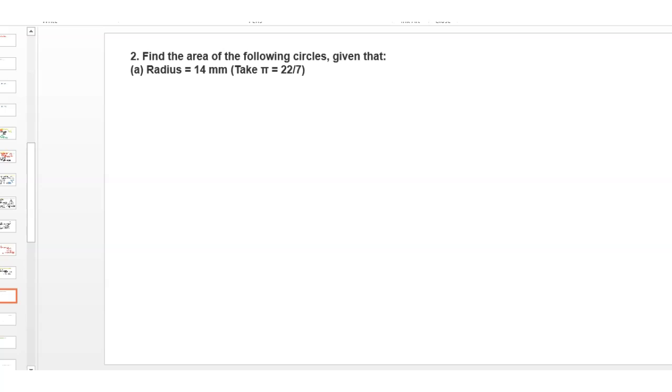Hello everyone. Welcome back to my channel. Today's question is: find the area of the following circles, given that radius equals 14 mm, where pi